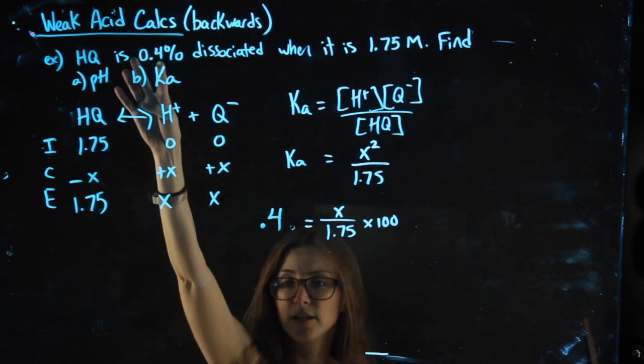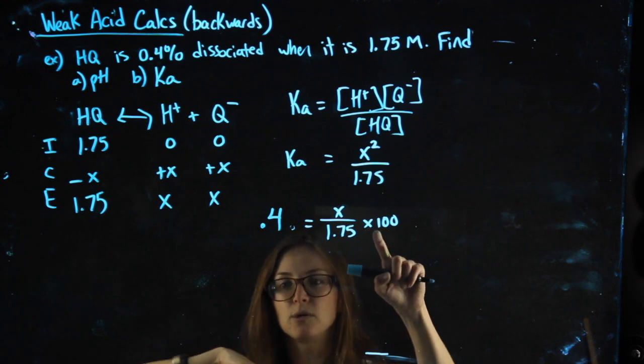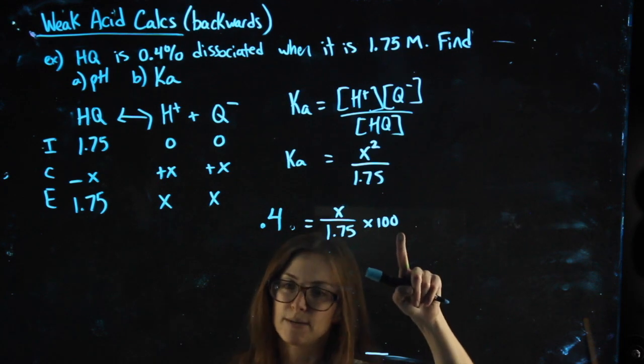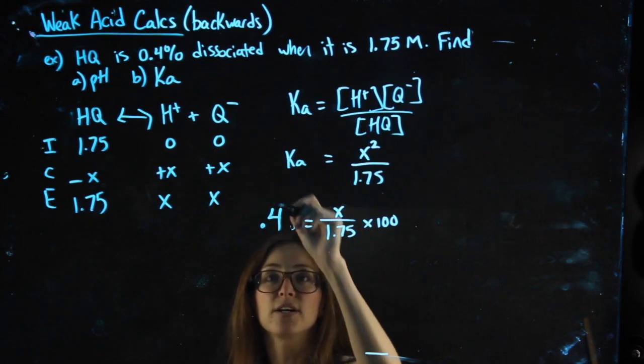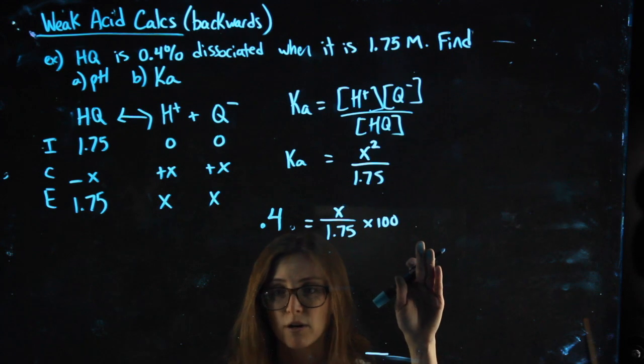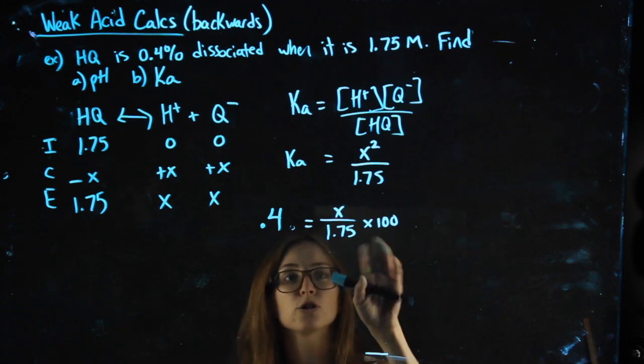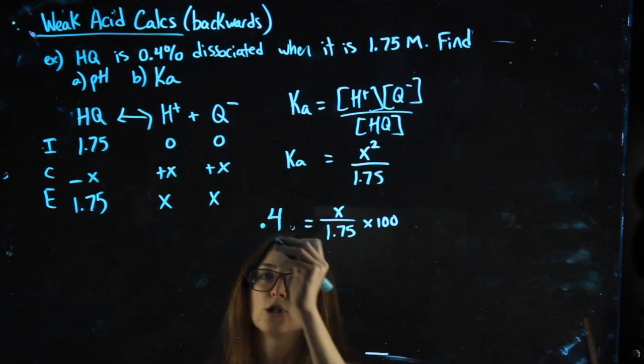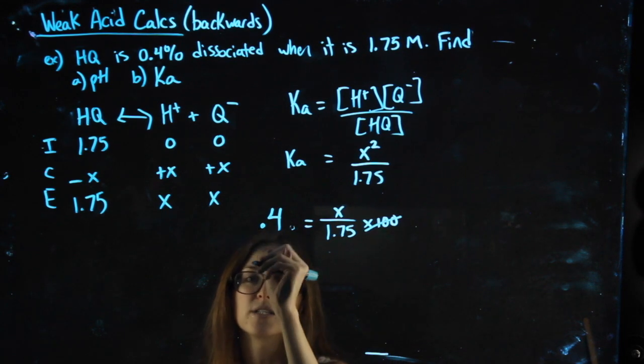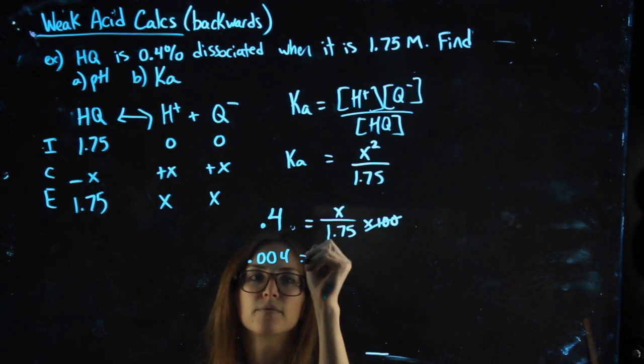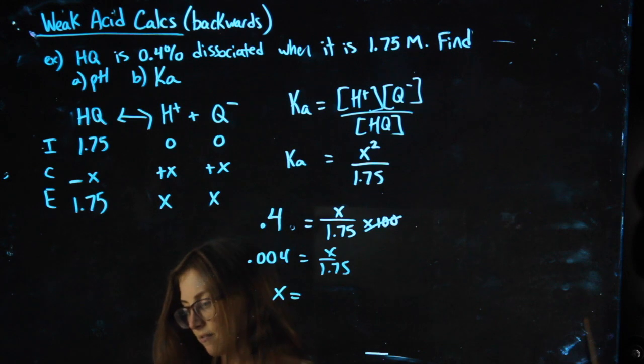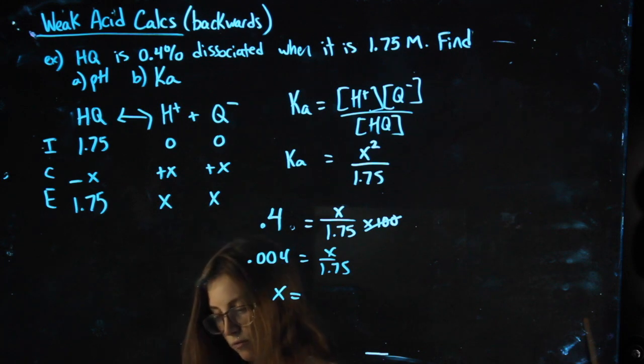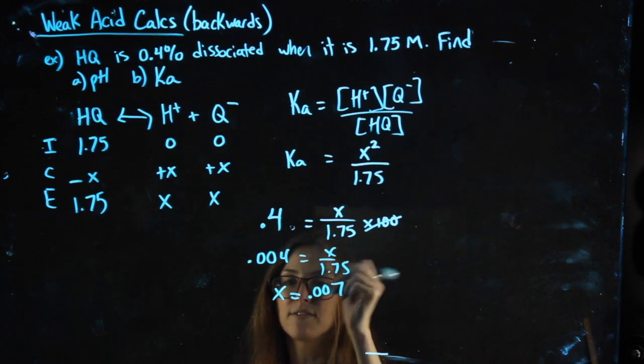I did not move the decimal at all. Moving the decimal would mean I didn't have this times 100 here. So I couldn't do anything with my KA, but I was able to figure out this little formula that's going to allow me to solve for X based on my percent dissociation. So the first thing I'm going to do is divide by 100. That gets rid of this and moves the decimal on this one. Then I can cross multiply and I get 1.75 times 0.004. I get 0.007 for my X value.